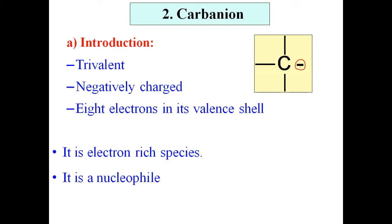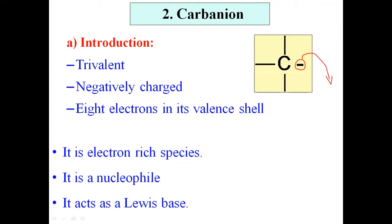In a chemical reaction, the carbanion has a tendency to donate its electron pair. There is a negative charge, meaning an electron pair that it can donate to form a covalent bond with another atom. Therefore, according to Lewis theory, we can say that it is an example of a Lewis base. This is just the introduction to what a carbanion is and some properties of carbanion.